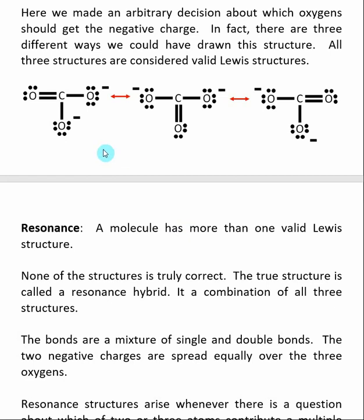Because the charges move, any one of these structures is not truly correct. Because in reality, a resonance structure is a combination of all three of these structures. So if we took all three of them and combined them into one structure, then we would have an accurate representation of the true structure of carbonate.